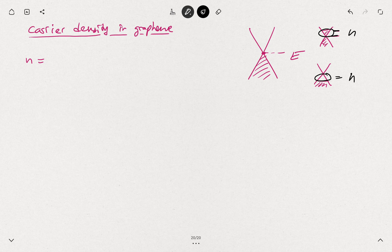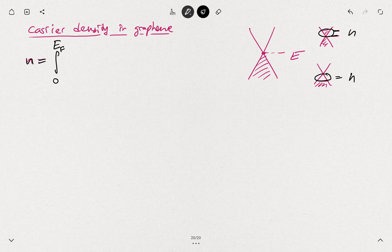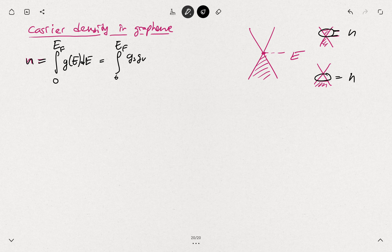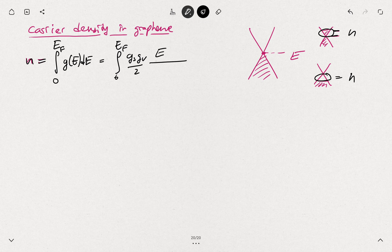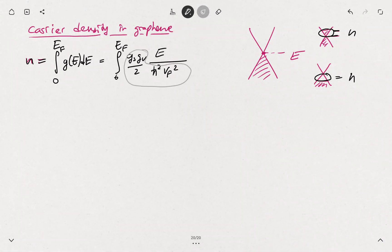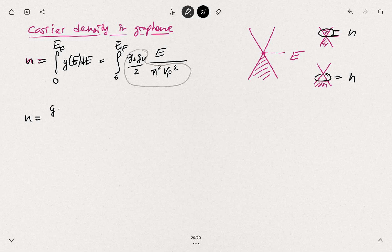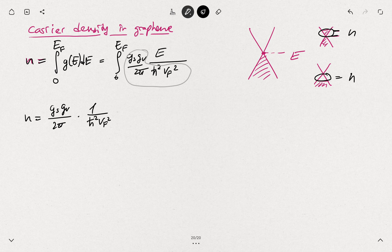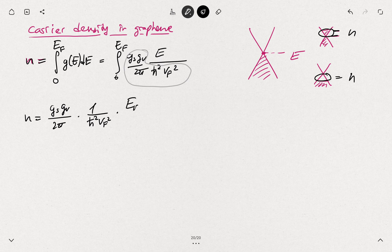Then you would need to calculate this excess of electrons here or this lack of electrons in this region. That's what our density I'm talking about here. Density of carriers is the integral from 0 to the Fermi energy of g of E dE. That's integral 0 to Ef of g-spin g-valley over 2π E dE over h-bar squared vf squared. All these bits are constants, so they go out of the integral. Your n is g-spin g-valley over 2π times 1 over h-bar squared vf squared times, if you take the integral, Ef squared over 2.